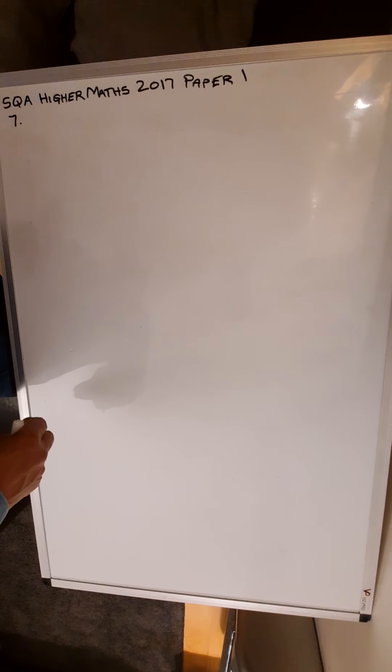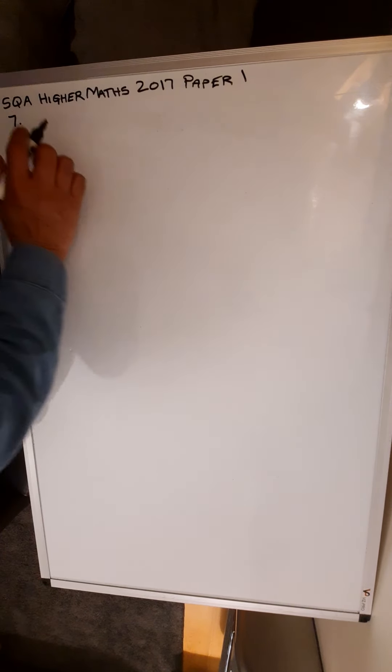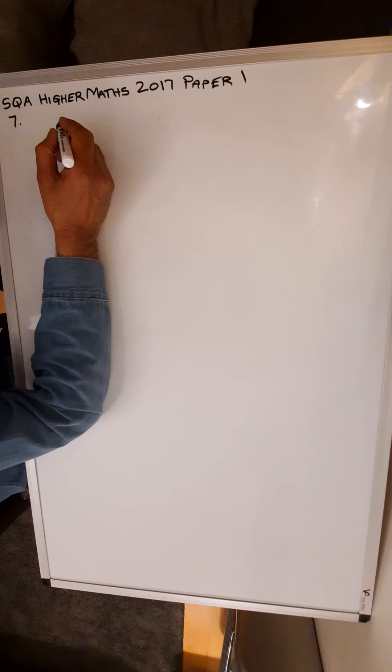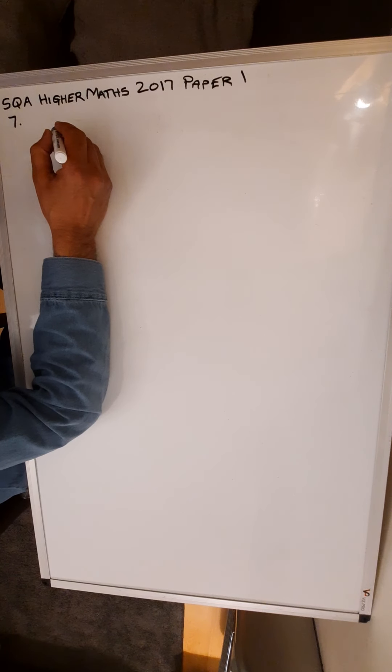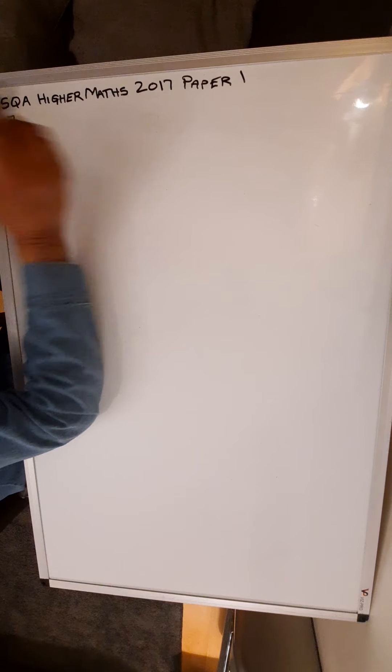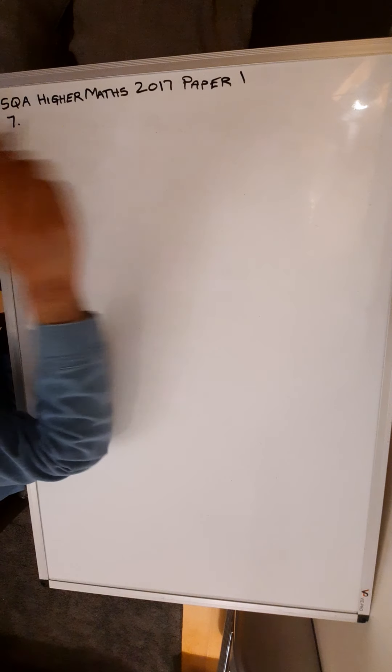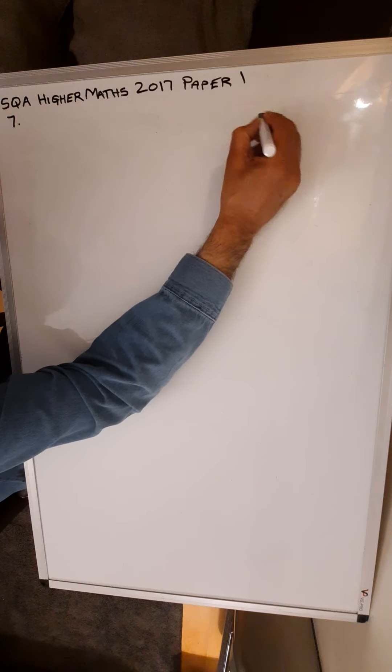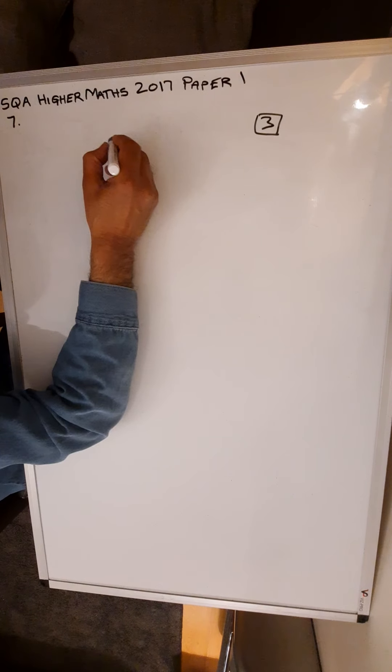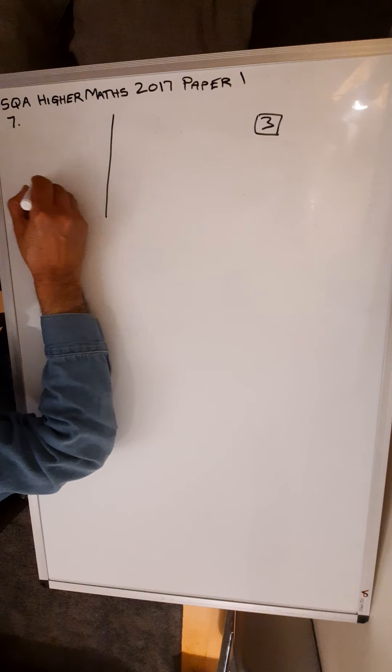SQA Higher Maths 2017 Paper 1, question number 7. A, B, and C are the vertices of a triangle. Find the equation of the median from C. Answer is worth three marks, so just need to get an idea where these three points lie on the XY axis.